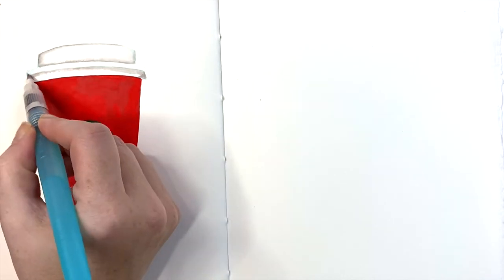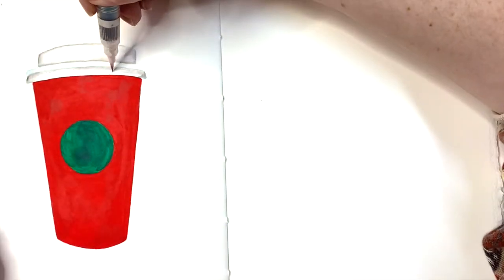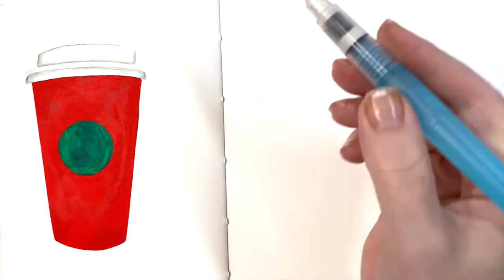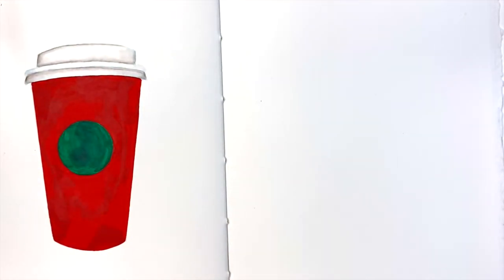If you didn't have a Tombow, you could totally use a gray watercolor or even mix yourself some gray acrylic paint. You just want to blend it out in the middle to create a gradient so that it looks like you have a shadow of a cup.